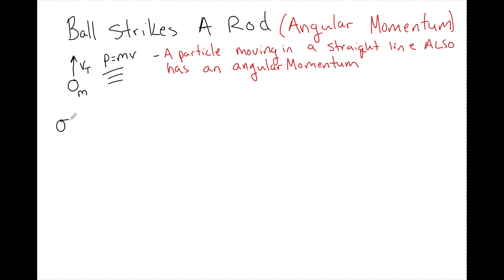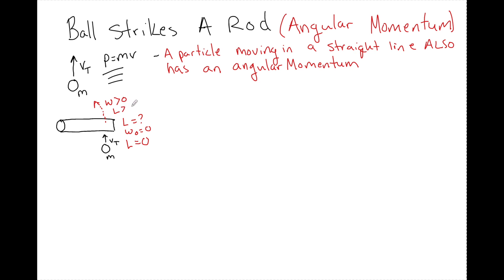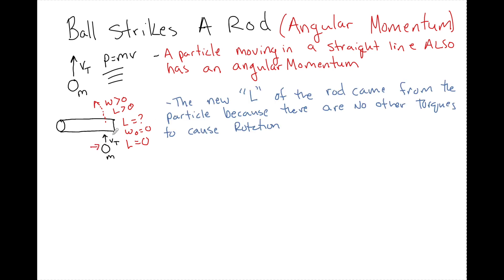I'm going to draw a pivot point and a long rod, and then I have some mass approaching that rod with some linear speed. If I look initially, what is the angular momentum of this rod? Well, if the speed is equal to zero, therefore L is equal to zero. But after the ball strikes the rod, the rod is going to start to spin — let's say this is an overhead view on a frictionless table. So now this thing is going to have some angular speed greater than zero, and therefore it now has a momentum greater than zero. So where did it get that angular momentum from? It got it from that particle.